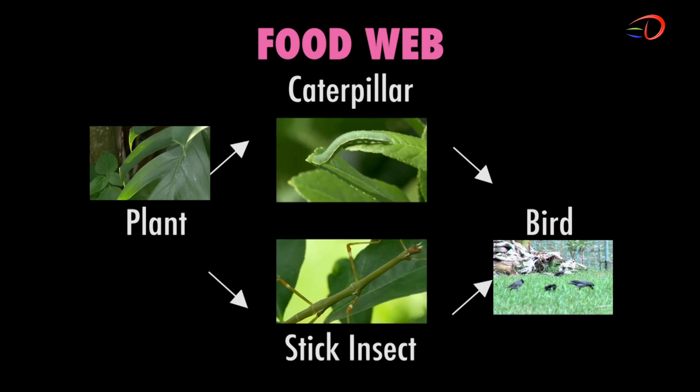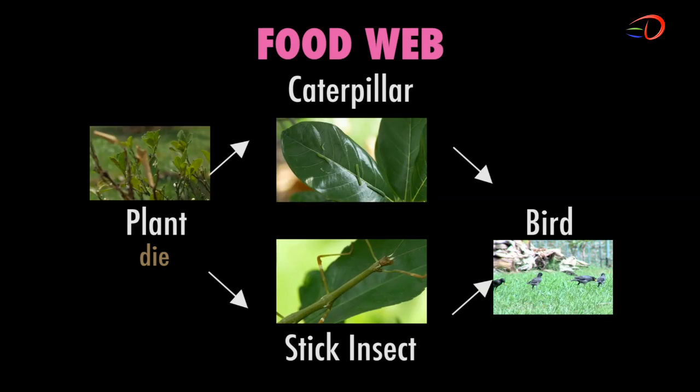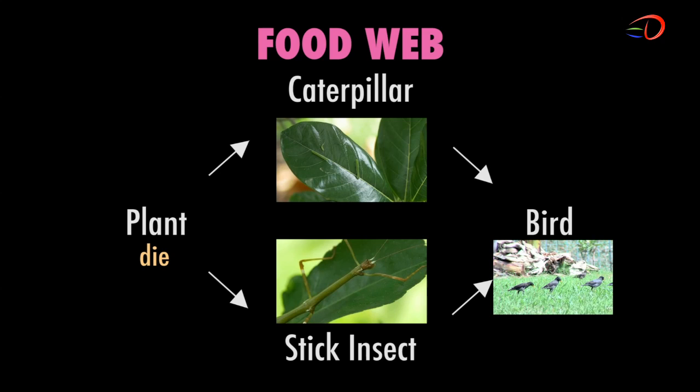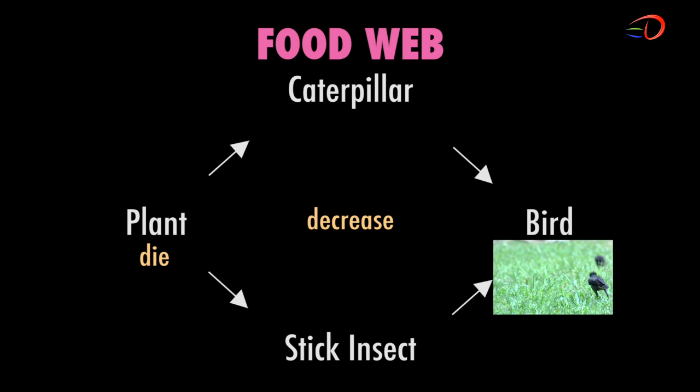What do you think will happen if all the plants in the garden die? The caterpillars and the stick insects will not have any food and will die. The populations of the caterpillars and stick insects will decrease. The birds will then have less food to feed on. Thus, the population of the birds will also decrease.